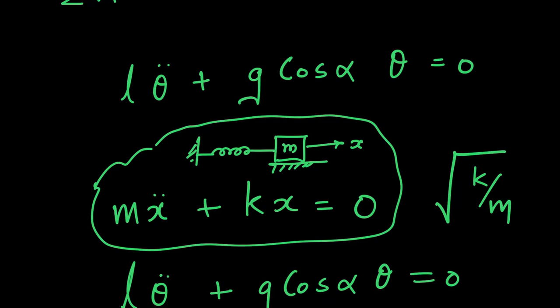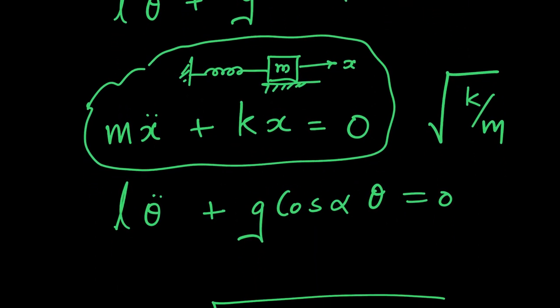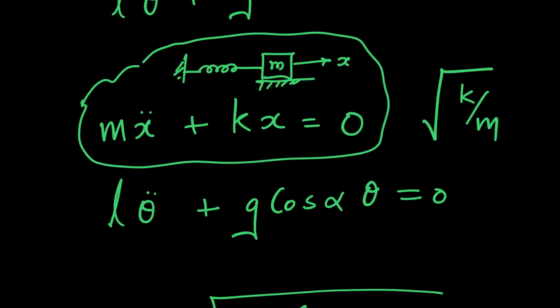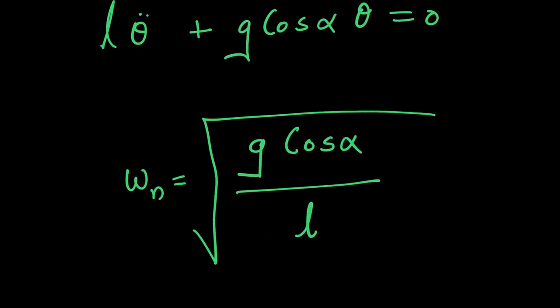For this particular case we know that the formula for natural frequency is root k by m. Extrapolating the same concept for this particular system, the natural frequency will be g cos alpha divided by root l. So that is the natural frequency of the system.